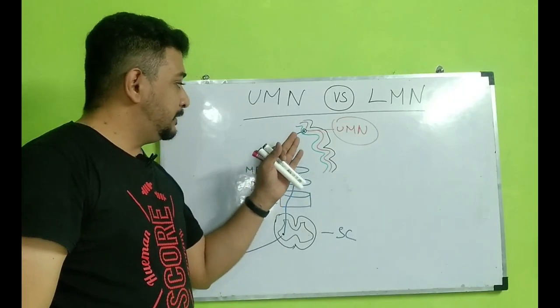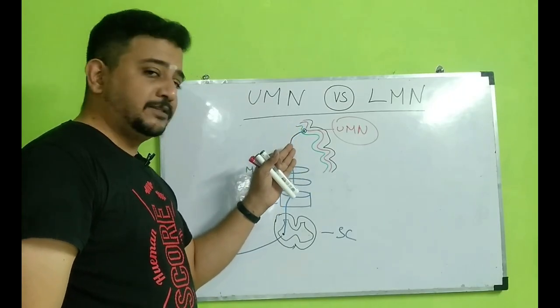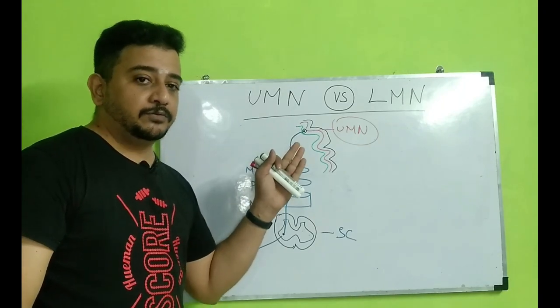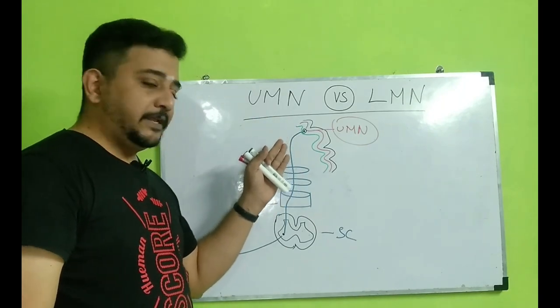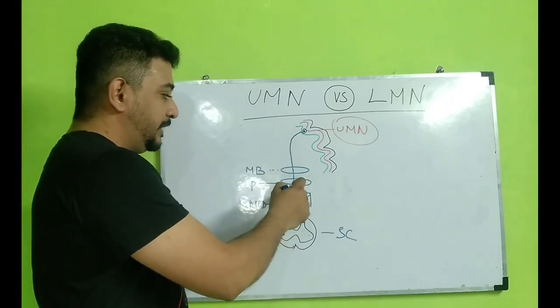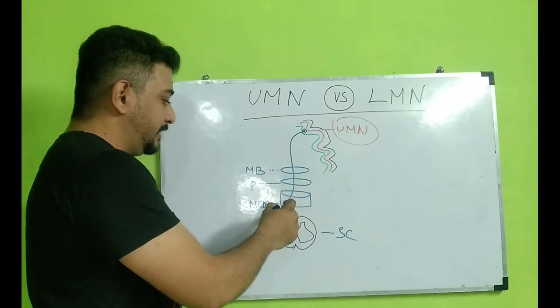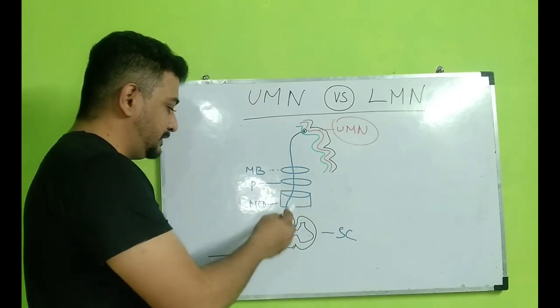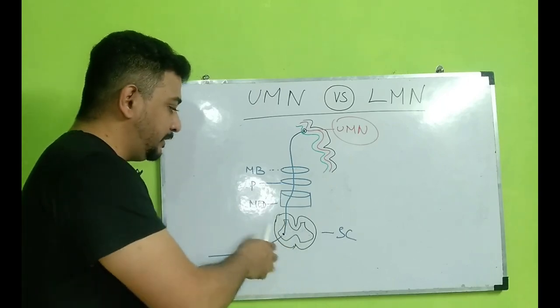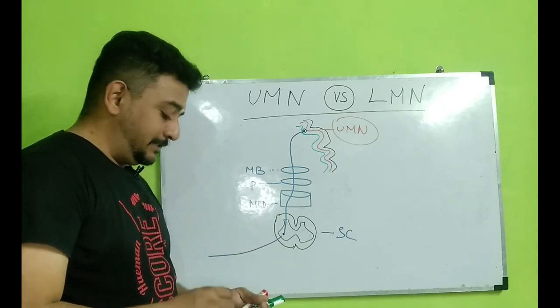The pyramidal tract from here starts and runs through the corona radiata, internal capsule in the ganglio capsular region, then it enters into the midbrain. It remains on the same side up to the midbrain and pons. When it comes to the medulla, it crosses to the opposite side and conveys or relays the information in the anterior horn cells in the spinal cord.